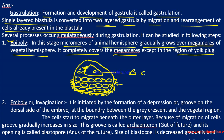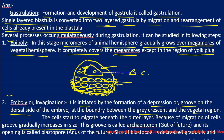The second step is emboly or invagination. It is initiated by the formation of a depression or groove on the dorsal side of the embryo. Because of the migration of cells, the groove gradually increases in size. This groove is called the archentron, which will form the gut of the future. Its opening is the blastopore. In the case of the frog, the blastopore will form the anus.